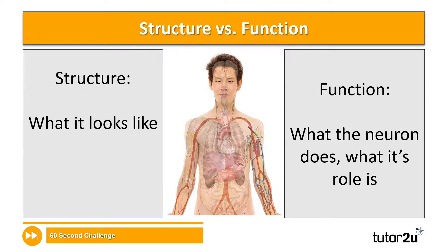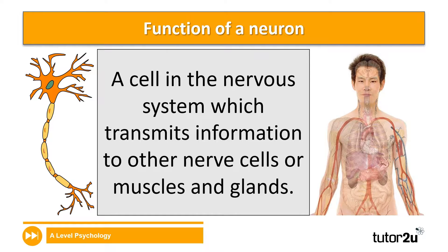Let's take a look at the definitions of these two terms — structure and function. For structure, when we're talking about neurons, we're talking about what it actually looks like. I'll be taking you through the structure of a neuron later when we discuss the different parts and types. The function of a neuron is about what a particular neuron does — that is, what its role is. Generally speaking, the overarching function of a neuron is to transmit information around the body — specifically to other nerve cells, muscles, and glands. The function is largely determined by the type of neuron it is, which we'll discuss in later sessions.